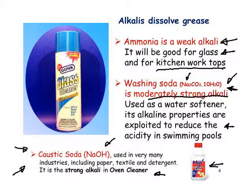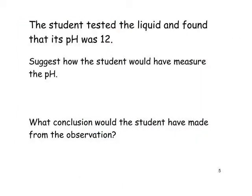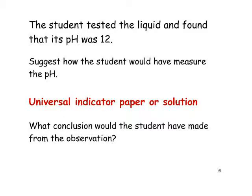Returning to the mole question: the student tested the liquid and found its pH to be 12. Suggest how the student would have measured the pH. Universal indicator paper — it will tell us not only whether it's acid or alkaline but give us an indication of the pH value. Most universal indicator paper indicates only up to pH 12, so the colour won't distinguish between 13 and 14, but it would turn a dark purple or indigo colour.